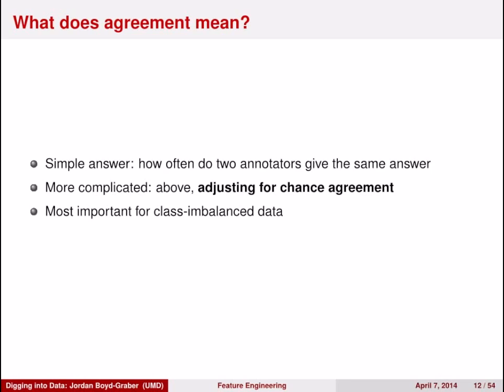For example, with spam versus not-spam email, there's a lot more of one than the other. So you can look like you have good agreement, but if most of your email is spam and everyone just labels everything as spam, it'll look like they're agreeing — even if for the small fraction that isn't spam, they never agree at all. That's the thing you care about the most. You could have a horrible system even though it looks like you're agreeing, if you don't correct for chance agreement.